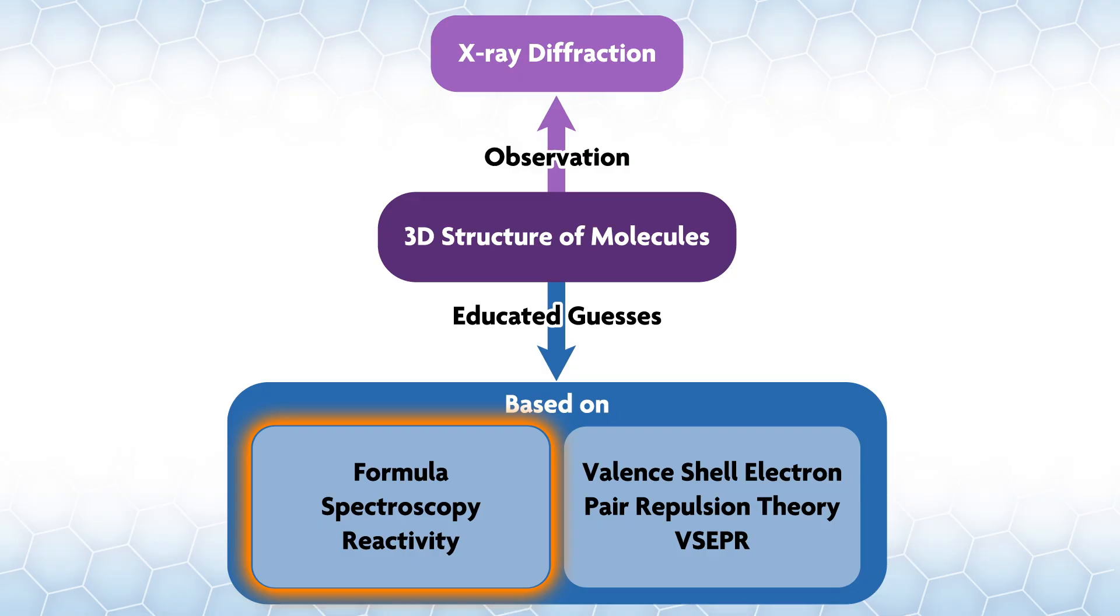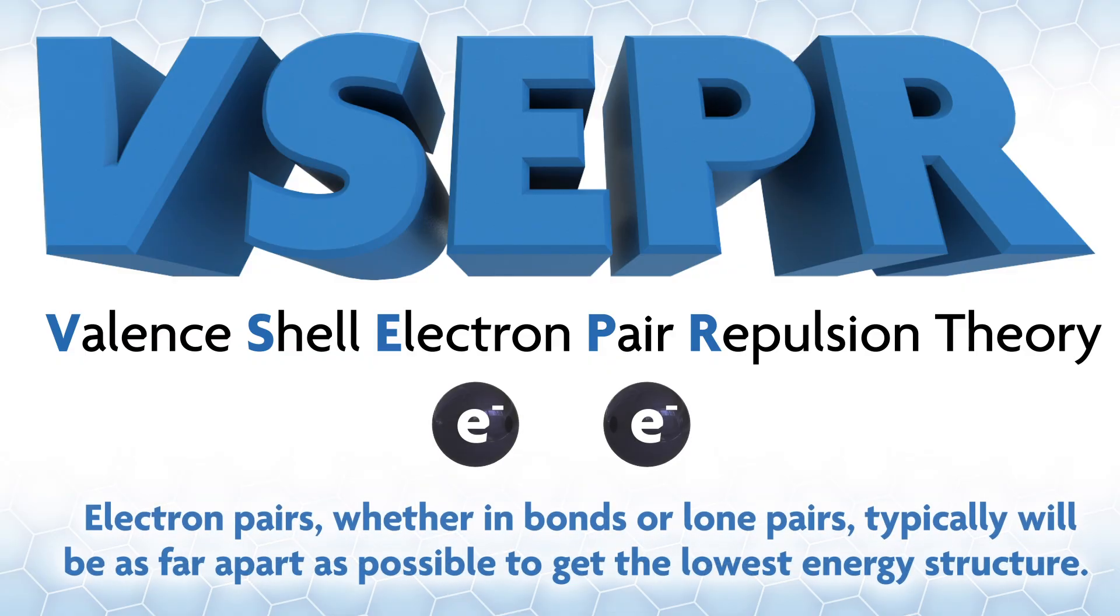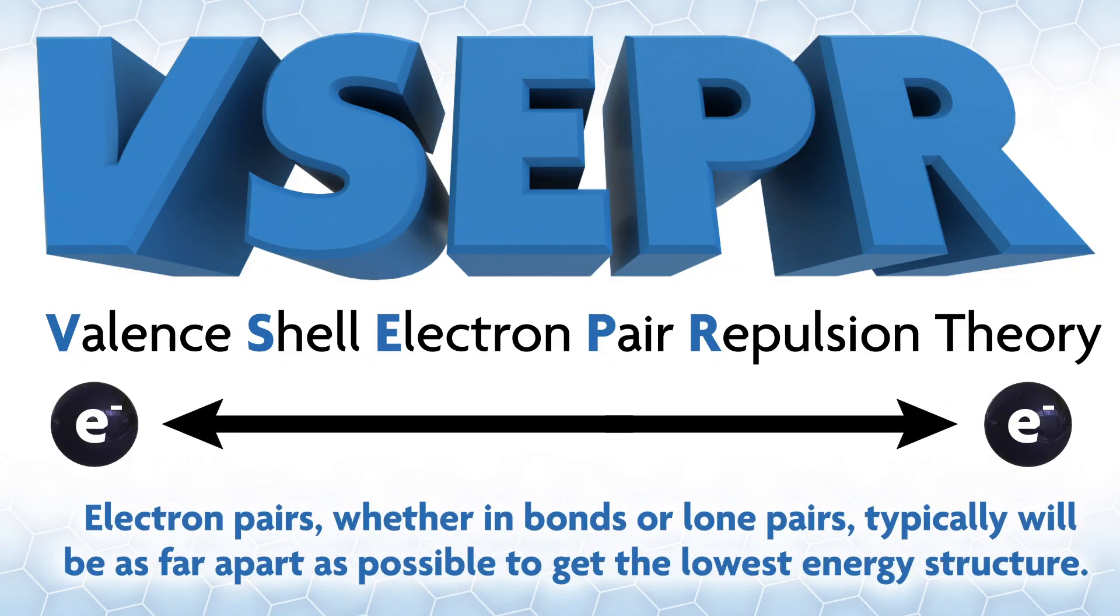The first tool chemists typically turn to is Valence Shell Electron Pair Repulsion theory, or VSEPR. The model relies on the fact that electron pairs, whether in bonds or lone pairs, typically will be as far apart as possible to get the lowest energy structure.